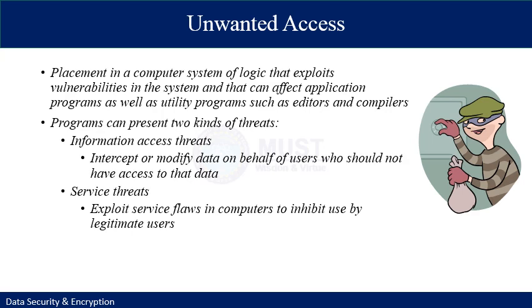This unwanted access can be mitigated by the placement of computer systems. Such programs can present two kinds of threats: information access threats — intercept or modification of data by those who should not have access — and threats to inhibit use by legitimate users. Two common examples are viruses and worms that can be used for unwanted access. Such attacks can be introduced into the system by means of discs or USB drives containing unwanted logical software that appears useful in nature but contains illegal executable files. They can also be inserted into a system using a network.